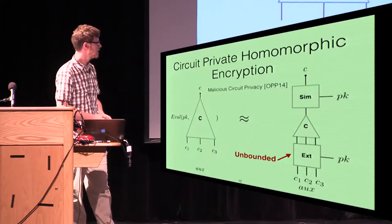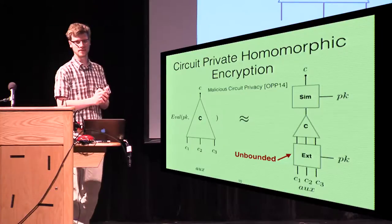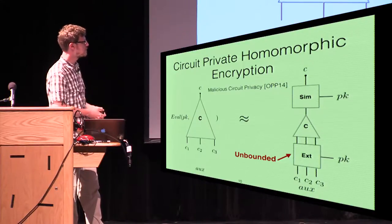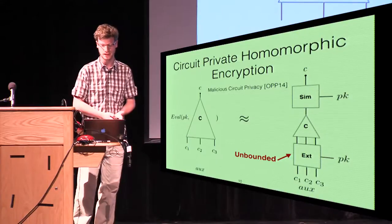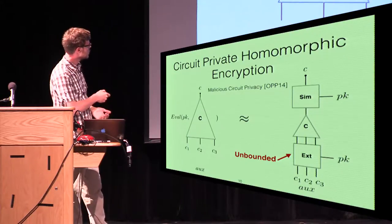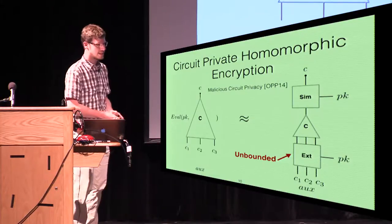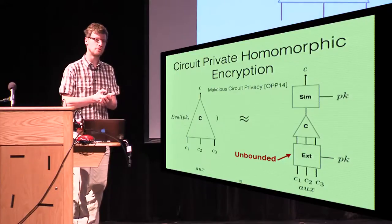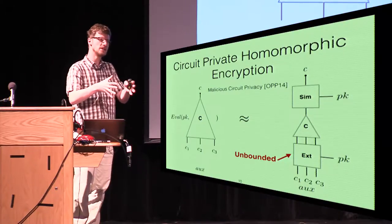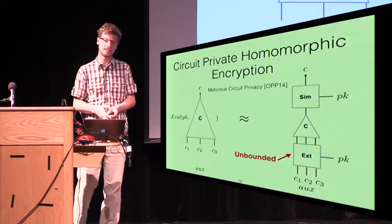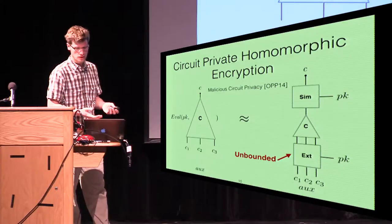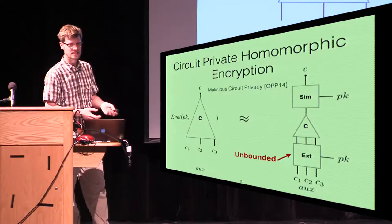One thing we immediately notice is that this extractor cannot be efficient, right? There's no setup assumption involved, so if this extractor were efficient, we could use it to break the IND-CPA security of the homomorphic encryption scheme. Ostrowski, Paskin, and Paskin, who introduced this notion, showed it can be obtained in a rather simple manner from semi-honest circuit-private homomorphic encryption. Basically, once you finish the computation of some semi-honest scheme, you set some information-theoretic garbled circuit on top that verifies that the computation has been done correctly, and only then releases the ciphertext c.